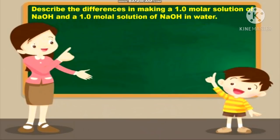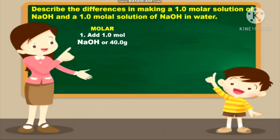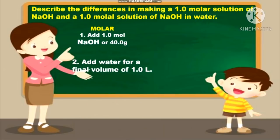To describe the differences: making a 1.0 molar solution versus a 1.0 molal solution of sodium hydroxide in water. To simplify things, we can make approximately 1.0 liter of each solution. To make 1 molar NaOH, we will add 1 mole of NaOH, or 40 grams — the total molar mass of sodium (Na), oxygen (O), and hydrogen (H) — then add water so that you have a final volume of 1 liter, because molarity is moles per liter.